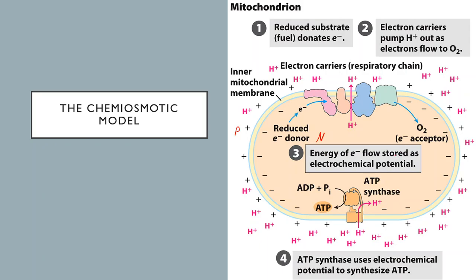The last step of electron transfer takes a molecule of oxygen and uses it as the electron acceptor, which produces water — that's where the electrons ultimately end up. Finally, you have the ATP synthase complex, which uses that proton gradient to drive a mechanism that allows the phosphorylation of ADP. That's how most of the ATP in this process ends up getting made.